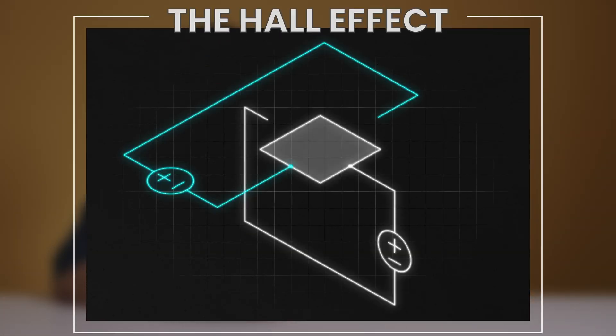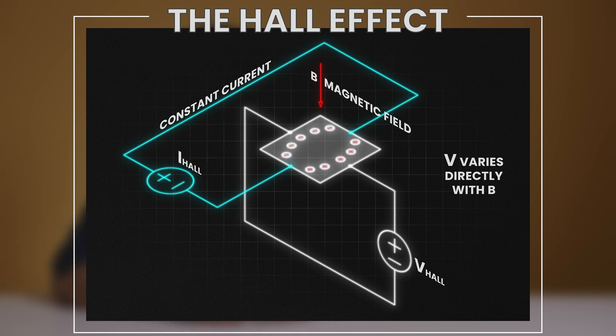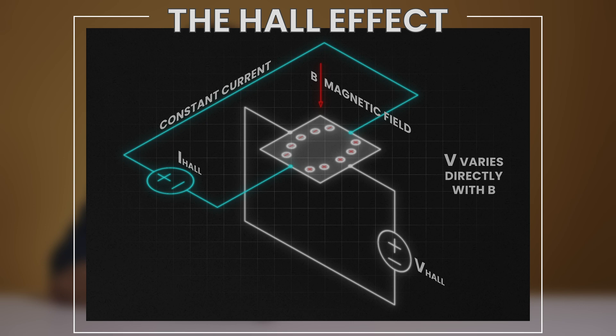In other words, when a current conducting material is placed into a magnetic field, a voltage will be generated perpendicular to both the current and the field.